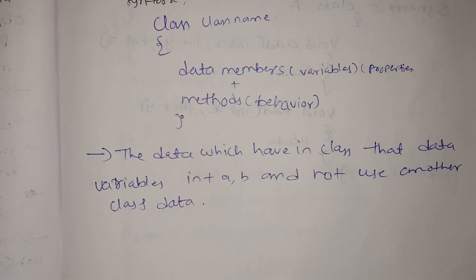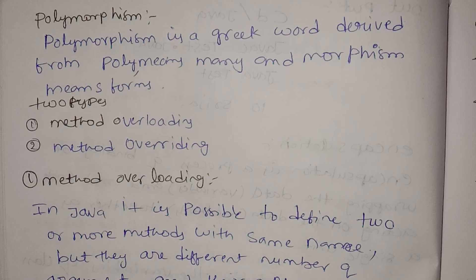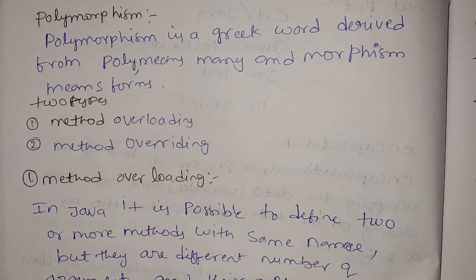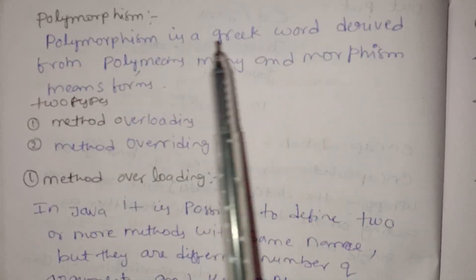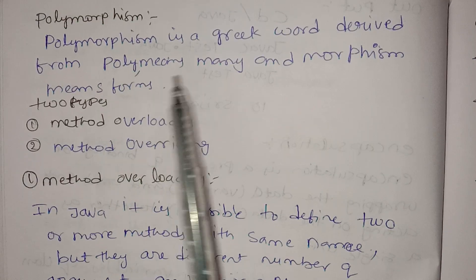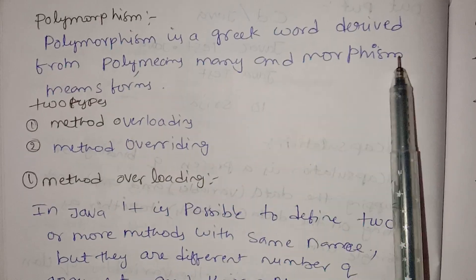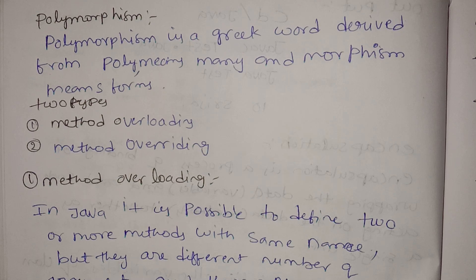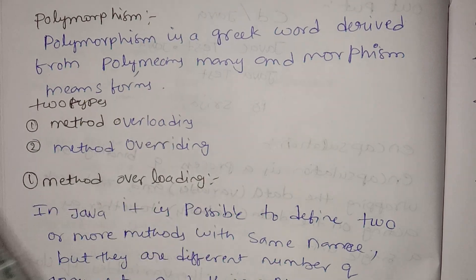The fourth OOP concept is polymorphism. Polymorphism is a Greek word derived from poly. Morphism means many forms — any types. There are two types of polymorphism.